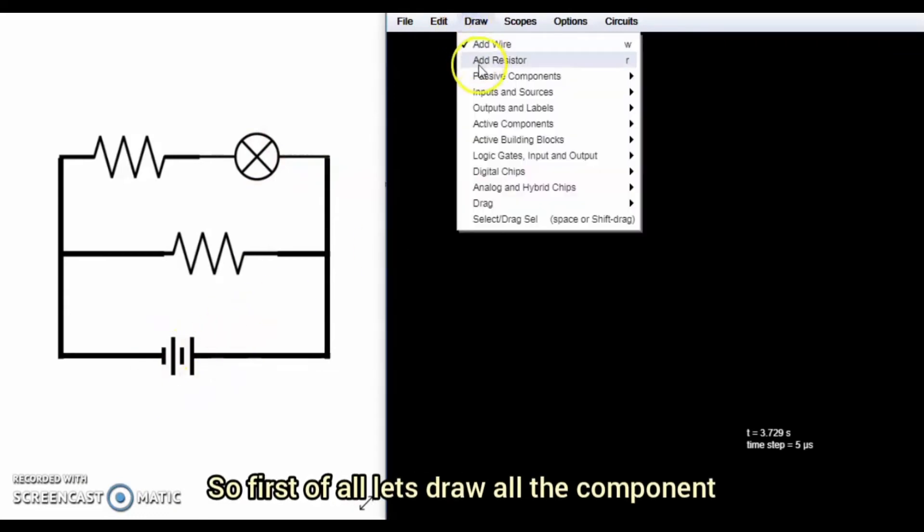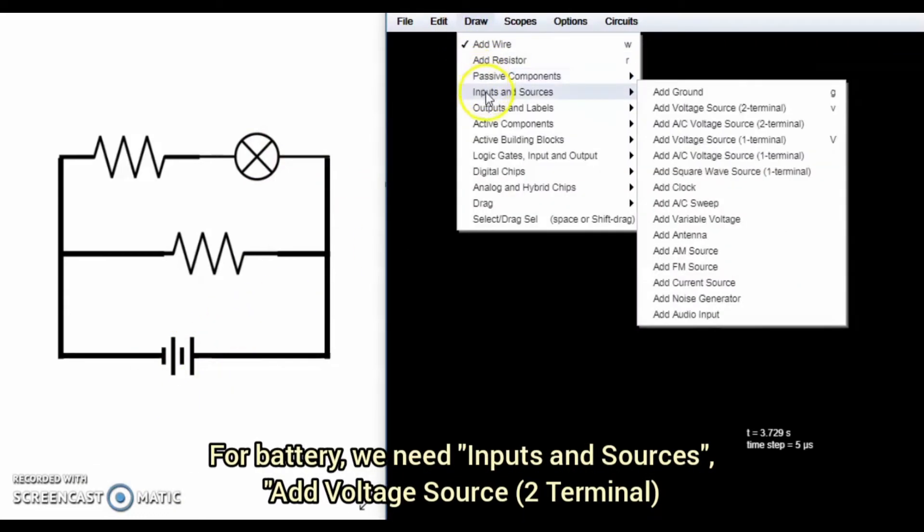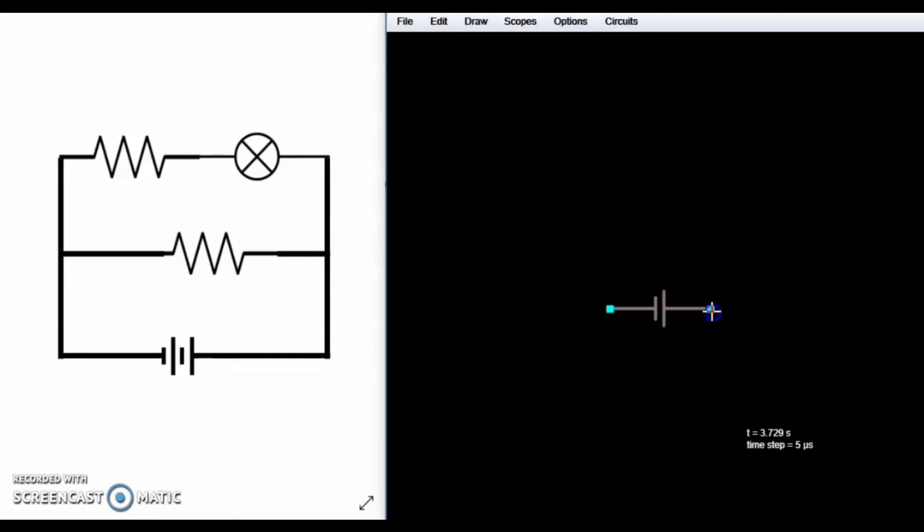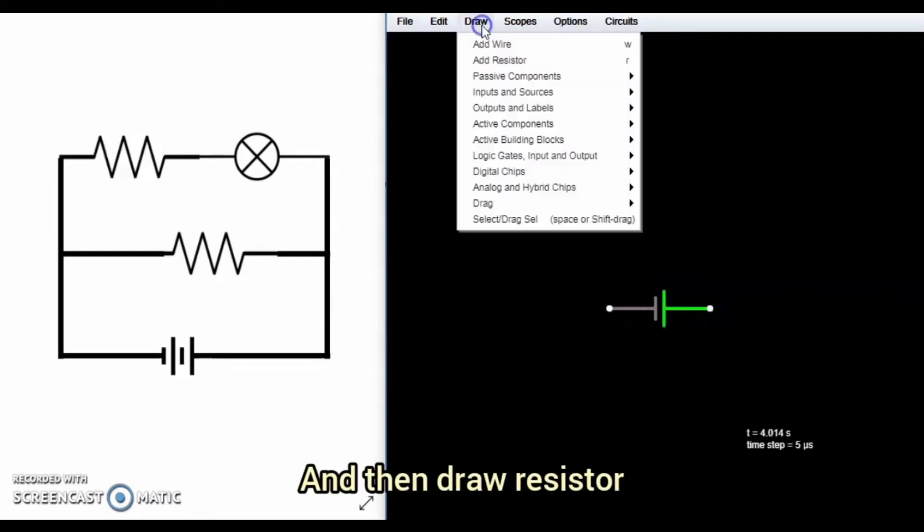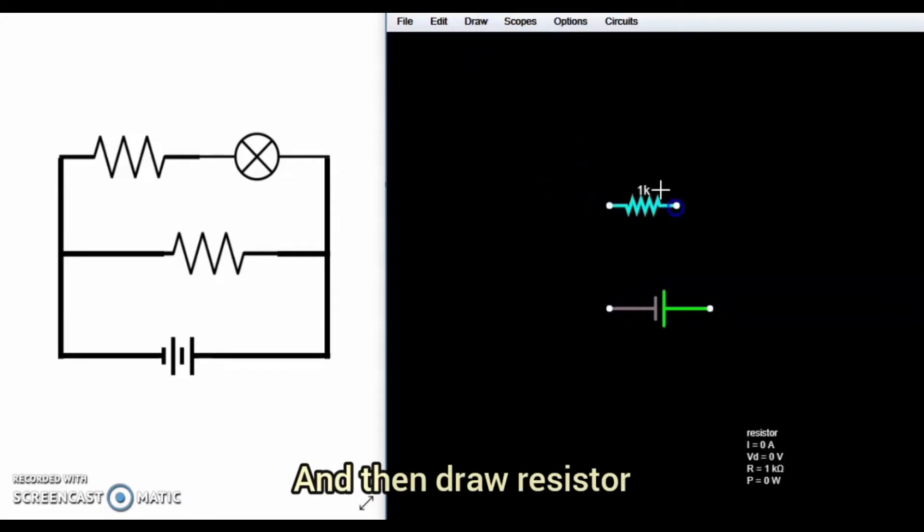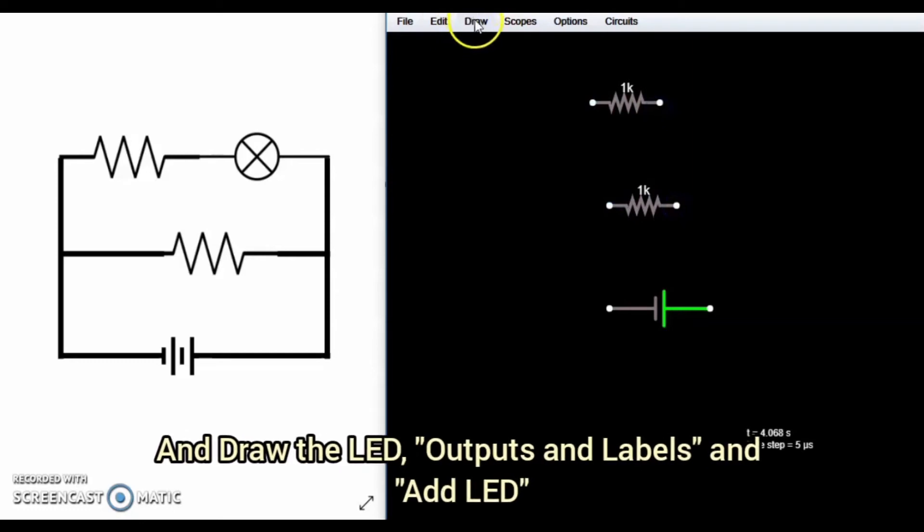So first of all, let's draw all the components. For the battery, we need the input and sources and voltage source for two terminals. And then draw the resistor and draw the LED.